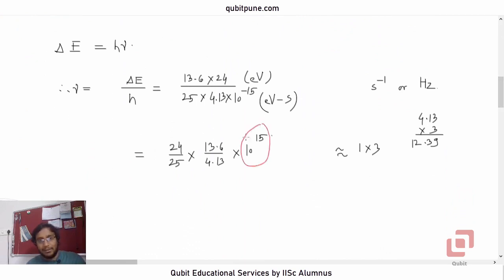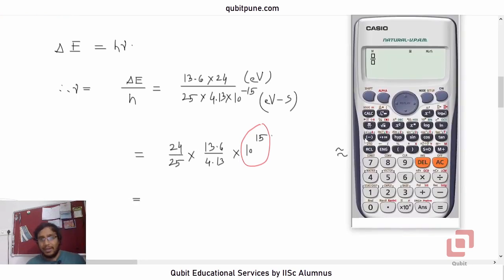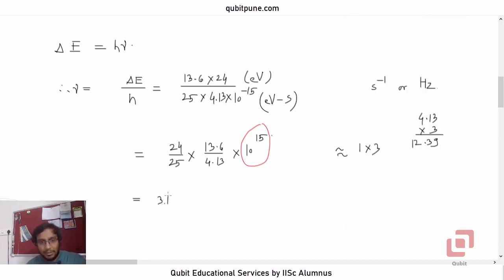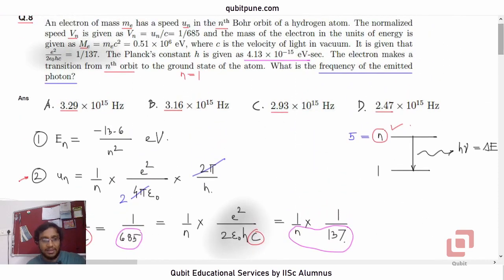So I'm going to do that now. 24 into 13.6 divided by 25 into 4.13. How much is that? That is 3.1612. Let's take the first two digits after the decimal point, 3.16 into 10 raised to 15 hertz. And do we have that option? Yes, that is option B.